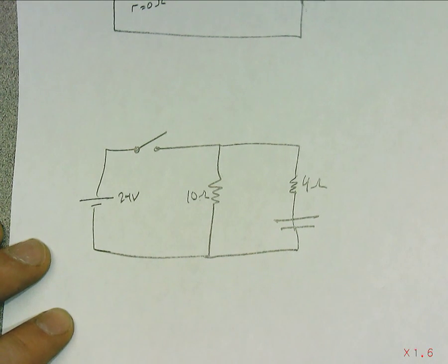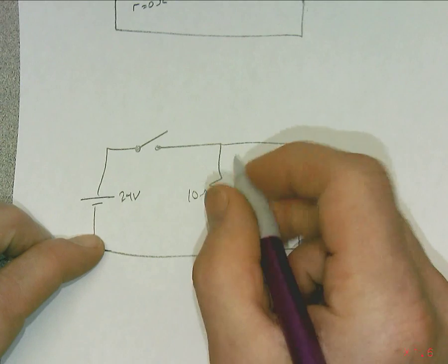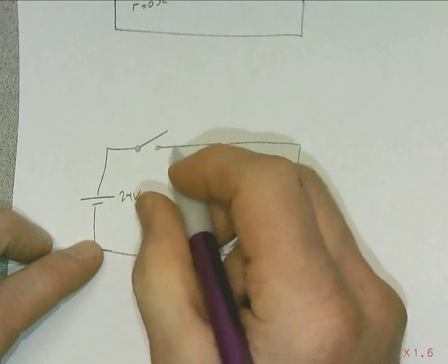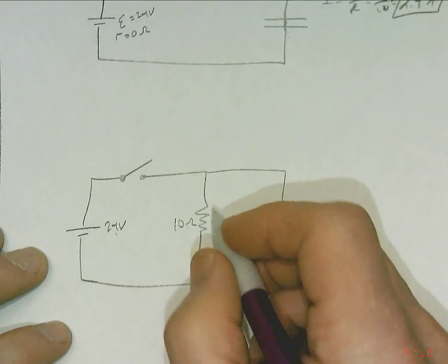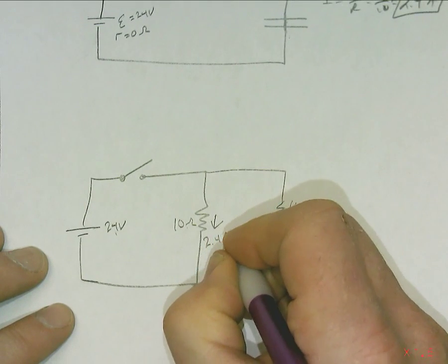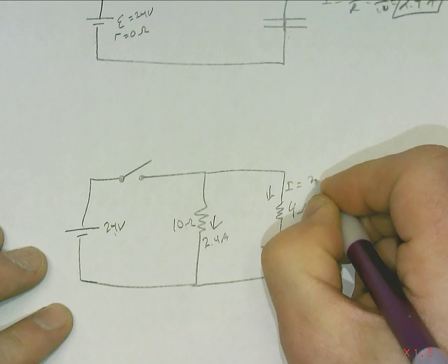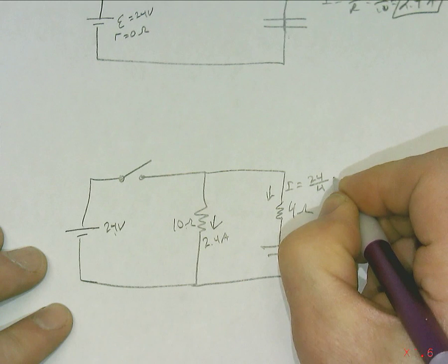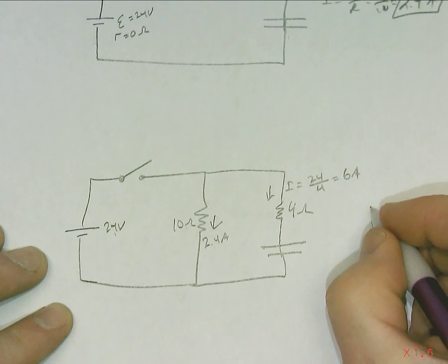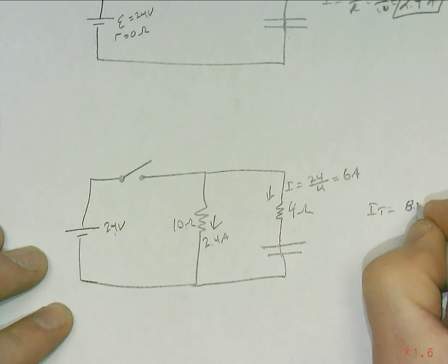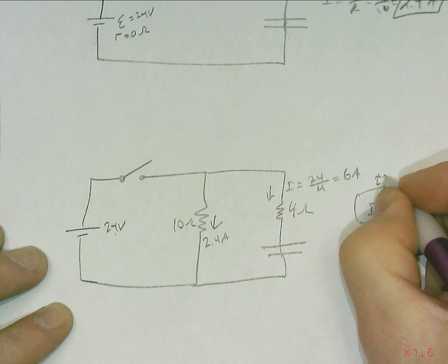Or, actually, what you can also do is just say, I know that 24 volts across the 10 ohm, like we did up here, is 2.4 amps. And this current here, I equals 24 over 4, which is equal to 6 amps. And so collectively, I total is 8.4 amps. That's at T equals 0.